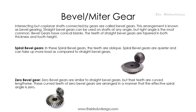Spiral bevel gears: in spiral bevel gears the teeth are oblique. Spiral bevel gears are wider and can take up more load compared to straight bevel gears. Zerol bevel gears: zerol bevel gears are similar to straight bevel gears but their teeth are curved lengthwise. The curved teeth of zerol bevel gears are arranged such that the effective spiral angle is zero.